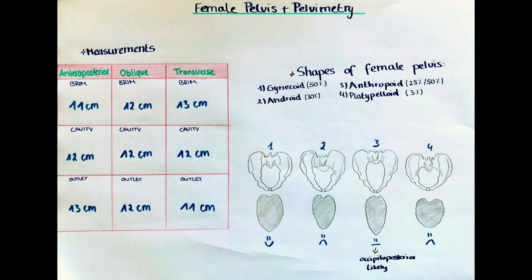A pelvimetry of this extent is however only done if the fetal size is abnormally large or if the proportion of the size of the mother and the size of the fetus seems to not allow a passing through the birth canal. However, the measurements are usually done during the first or second trimester, while due to the hormone relaxin at the end of pregnancy, the pelvis loosens up and the ligaments stretch to widen the pelvis a little bit more before birth.